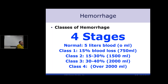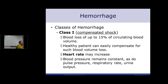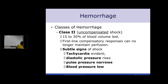Four stages of hemorrhage: the average adult has five liters of blood. Class I is up to 15% loss — compensated shock, body makes up for it, blood pressure maintained, heart rate increases, vasoconstriction, still getting oxygen to tissues, good urinary output. Class II is 15 to 30% — subtle signs of shock emerge; tachycardia becomes evident, diastolic pressure starts to increase, you get a narrow pulse pressure. Which shock type gives you wide pulse pressure? Neurogenic. Blood pressure starts to decrease slightly.